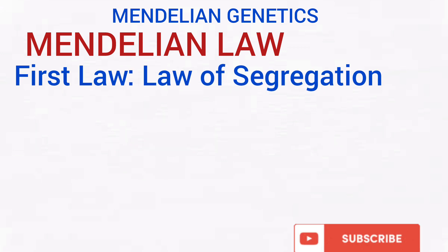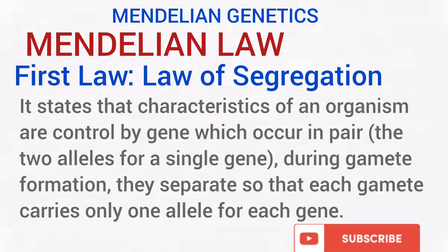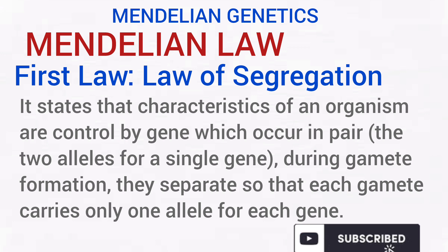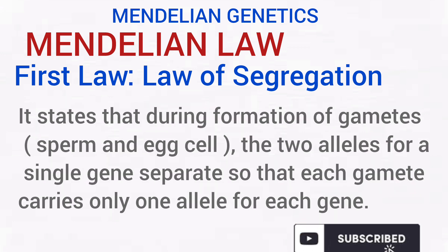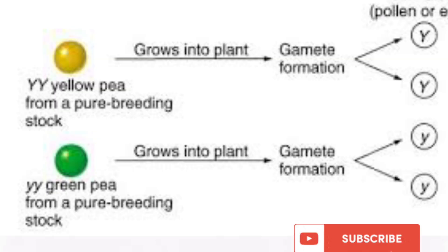The first law is termed the law of segregation. Segregation means to separate. It states that the characters of an organism are controlled by genes which occur in pairs. Two alleles occur for a single gene, and during gamete formation, these alleles separate such that each gamete carries a single allele. It can also be stated that during formation of gametes, the two alleles for a single gene separate so that each gamete carries one allele.